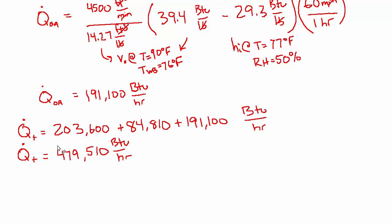And they asked us for the tonnage, so let's just convert that to tons. There are 12,000 BTUs per hour per ton. So BTUs per hour cancels, and we should be left with tons. And that's about 40 tons. And that's answer C.